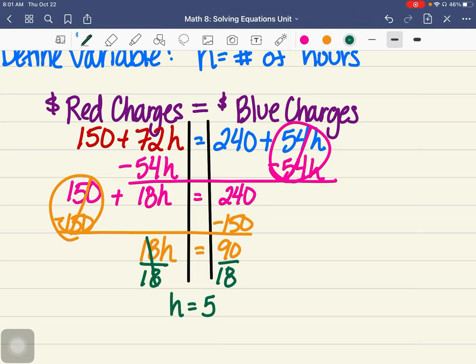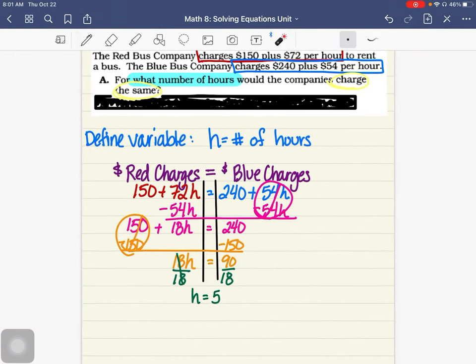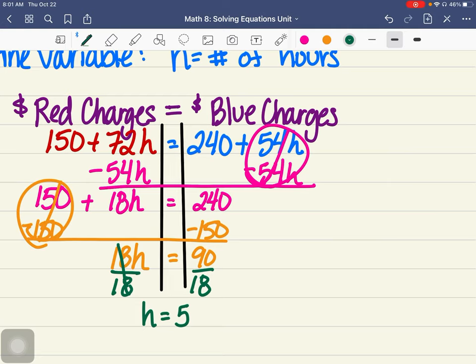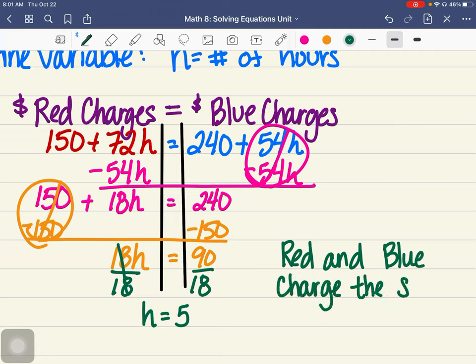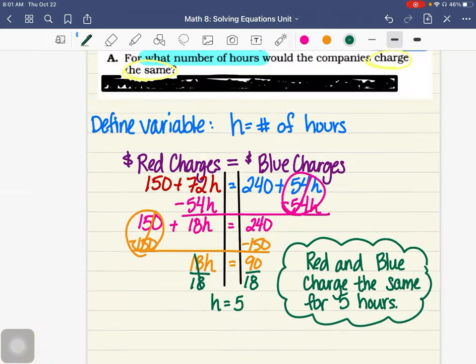So we've solved the equation. Now we just need to write down our answer. It says, what number of hours would the companies charge the same? So we would say red and blue charge the same at 5 hours. And that would be our final answer.